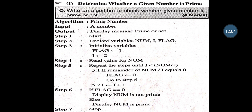Determine Whether a Given Number is Prime. Algorithm name is Prime Number. Input is a number; output is a message whether it is prime or not. Step 1: Start. Step 2: Declare variables Num, I and Flag. Step 3: Initialize Flag = 1 and I = 2. Step 4: Read the value for Num. Step 5: Repeat until I < Num / 2 — if remainder of Num / I equals 0, set Flag = 0 and go to Step 6; else increment I by 1. Step 6: If Flag = 0, display Num is Not Prime; else display Num is Prime. Then Stop.